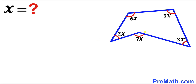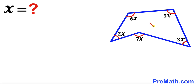Welcome to pre-math. In this video we have a five-sided irregular pentagon as you can see in the given diagram, such that its given angles are 2x, 3x, 5x, 6x, and finally this outside angle is 7x. Our task is to find the value of x.